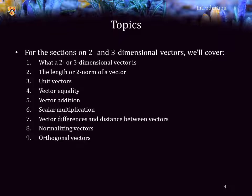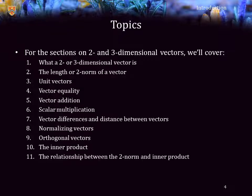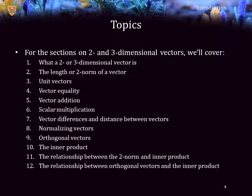We will then describe normalizing vectors — that is, converting them so that their length is equal to one — and then we will discuss orthogonal vectors, or vectors that are at right angles to each other. We will then describe the inner product; in secondary school you may have learned this as the dot product, however for the purposes of this course and others you will call this the inner product. We will then see the relationship between the two-norm and the inner product, and the relationship between orthogonal vectors and the inner product. Finally, we will describe the line or plane of all vectors that are orthogonal or at right angles to a given vector.